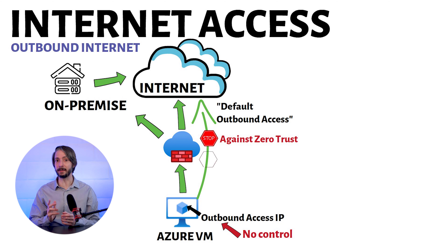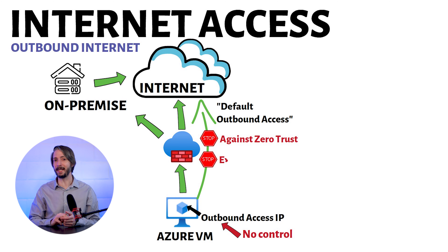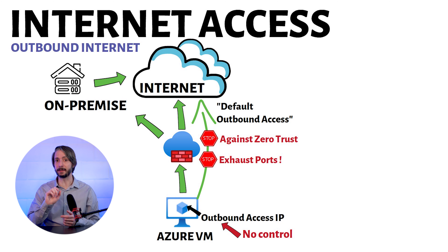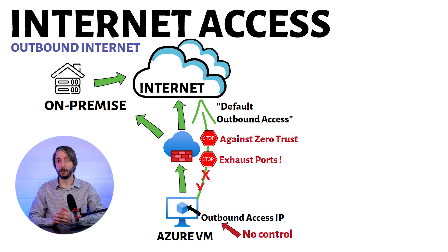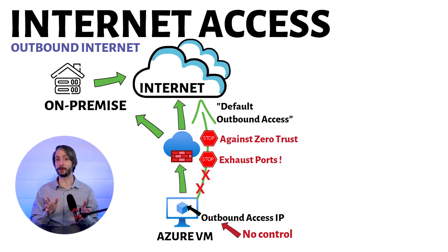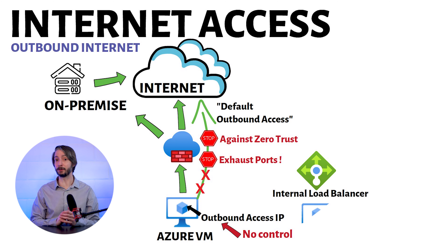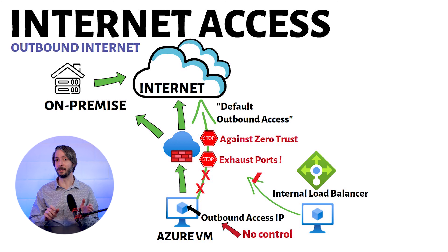Why is it not a good idea to use the default outbound access? First of all, it's against the zero-trust network security principle, as not all VNets should be opened for direct outbound internet access. Secondly, in case the VM makes many burst connections towards the internet, it may actually use up all the port allocation. This can result in failure for subsequent connections.